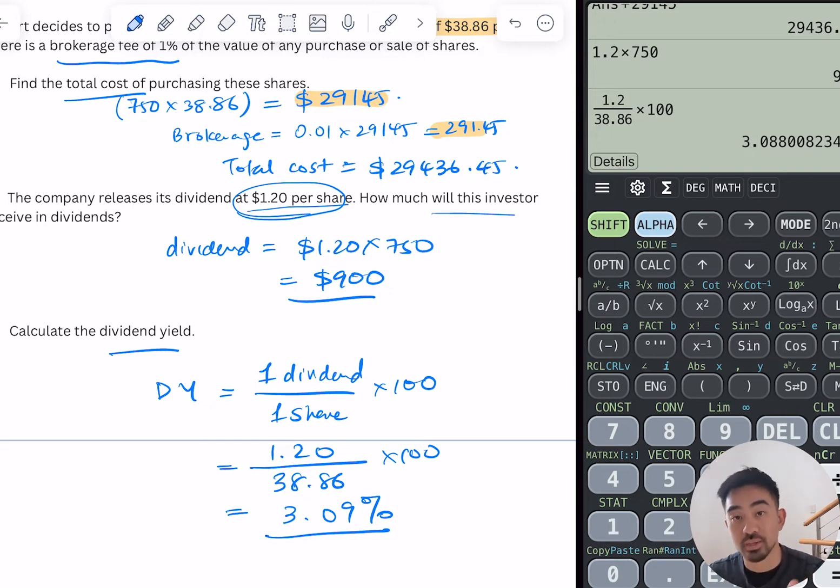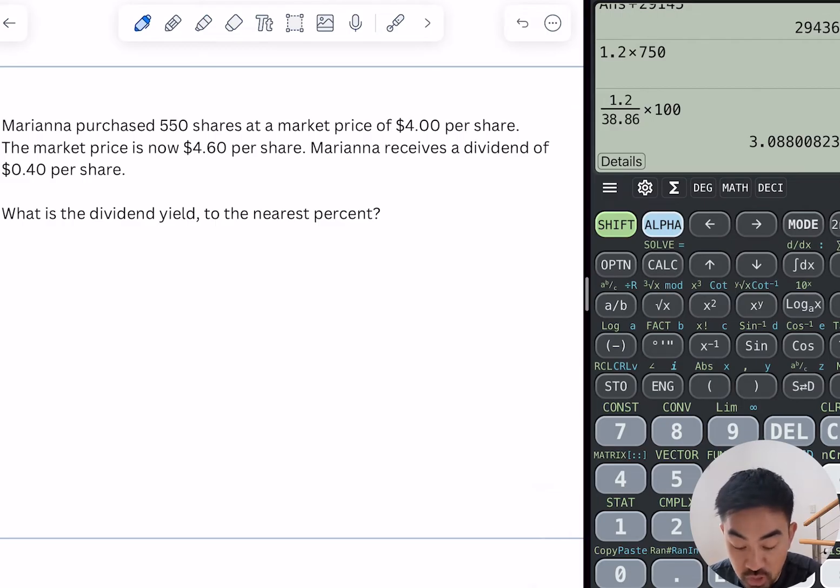Okay, next question. Marianna purchases 550 shares at a market price of $4 per share. The market price is now $4.60 per share. Marianna receives a dividend of 40 cents per share. What is the dividend yield? Okay, so there's quite a lot going on, a lot of numbers flying around.